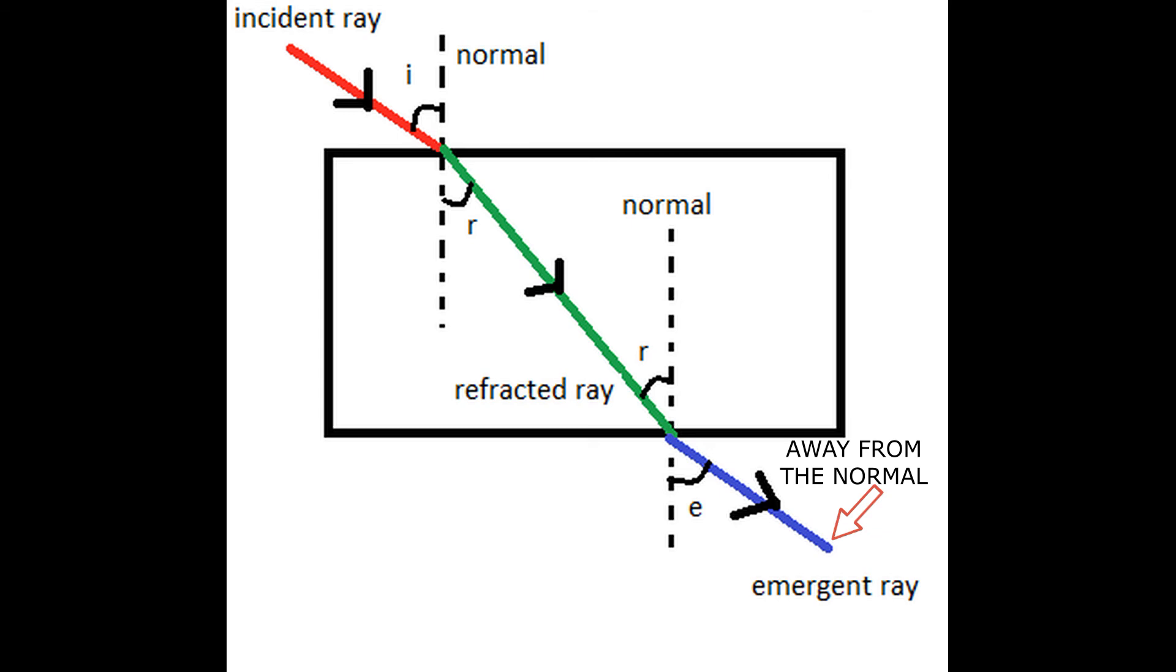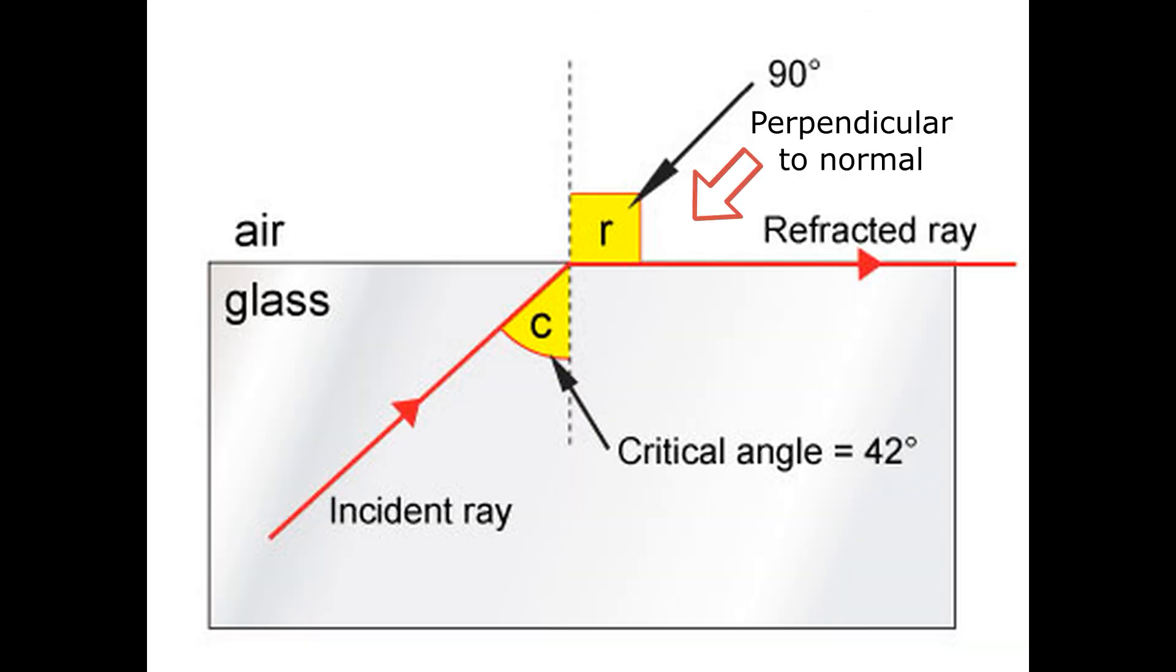So what is this critical angle? We know that when light moves from an optically rarer medium to an optically denser medium, it bends away from the normal line. Critical angle is the angle of incidence which is big enough so that the reflected ray becomes perpendicular to the normal line.